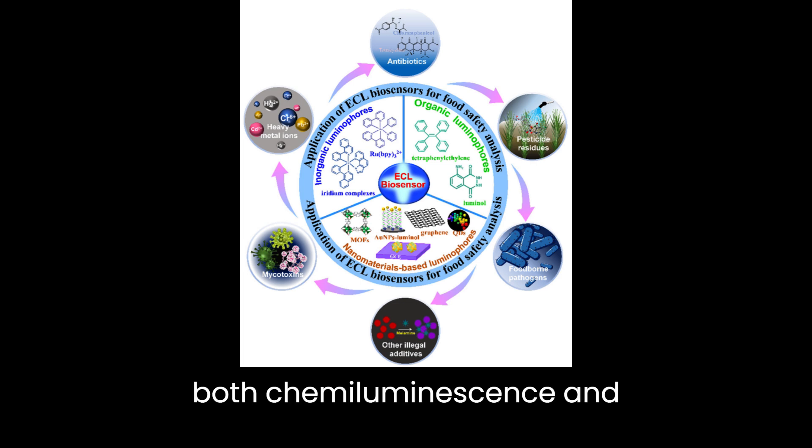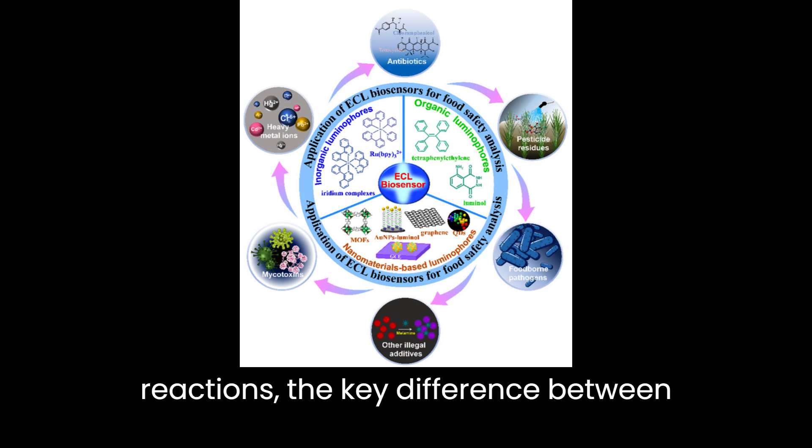In conclusion, while both chemiluminescence and electrochemiluminescence involve the emission of light through chemical reactions, the key difference between the two is the driving force behind the reaction.